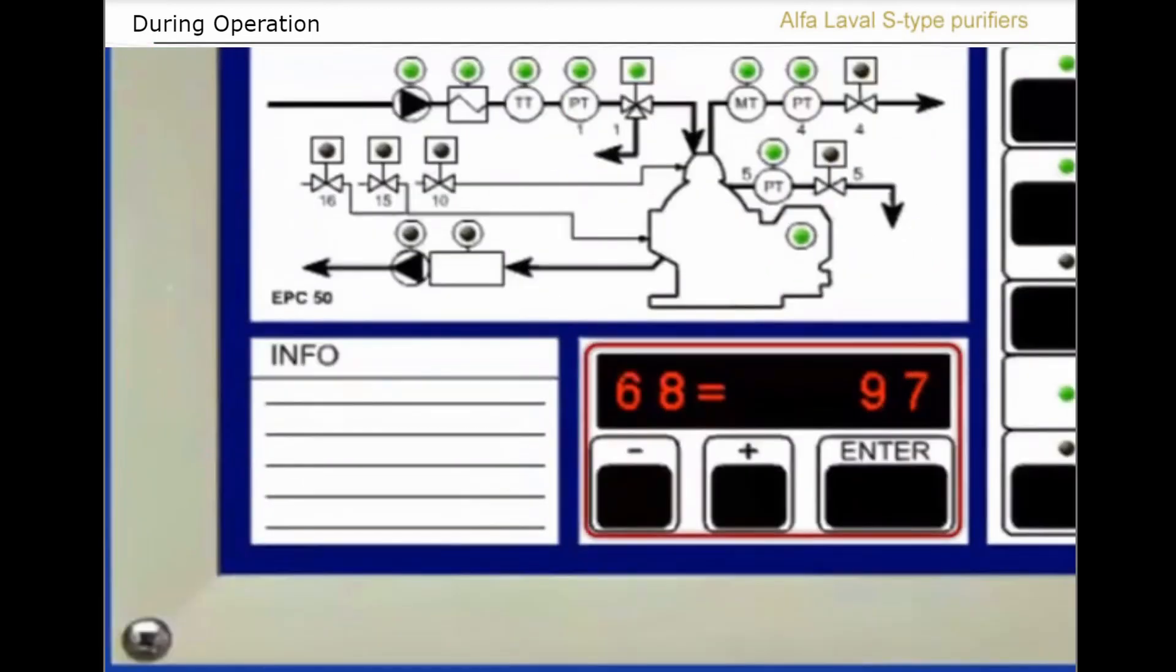Operational information may be read on the display by pressing the plus button repeatedly. The current running program number is shown on the left of the display and the time left before the next sludge discharge on the right. Oil feed temperature. Outlet flow rate.